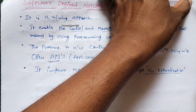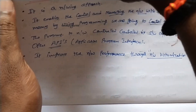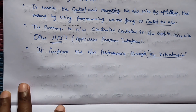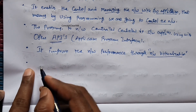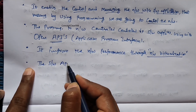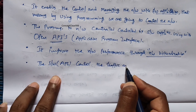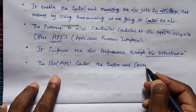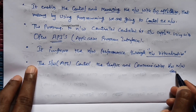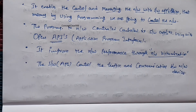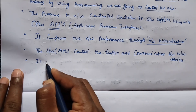It improves network performance through network virtualization. The software application API will control the traffic and communication between network devices. Traffic means what data is coming in and what data is going outside — this entire thing is called network traffic, and it will be controlled by the API between the network and devices.